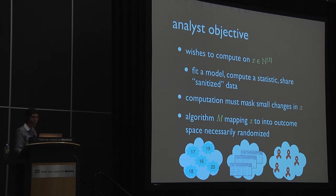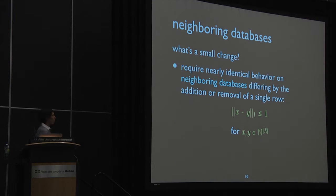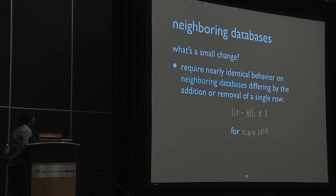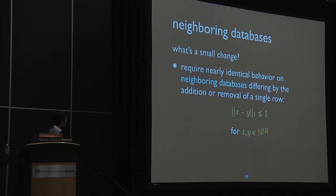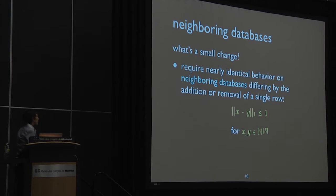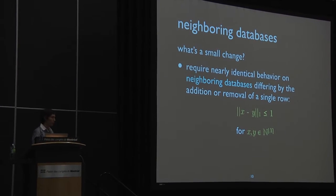What do I mean by masking small changes? We'll require that our algorithms obtain nearly identical behavior on neighboring databases. Databases are neighboring if they differ by the addition or removal of a single row — that is, X and Y are neighbors in histogram representation if their L1 distance is less than or equal to one.